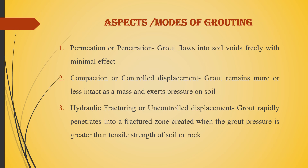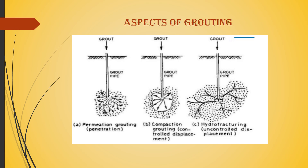To recap: in permeation grouting the grout penetrates with minimal effect; in compaction or controlled displacement the grout remains intact as a mass and exerts pressure on the soil; in hydraulic fracturing or uncontrolled displacement the grout very rapidly penetrates into the fractured or cracked zone. A picture shows the three aspects — permeation grouting, compaction grouting, and hydraulic fracturing — along with the grout pipe.